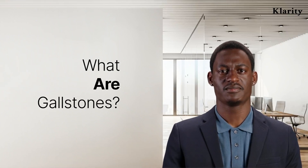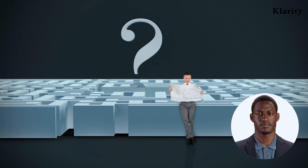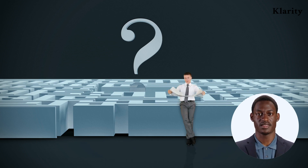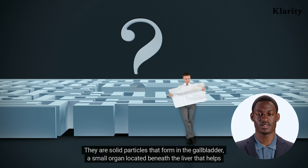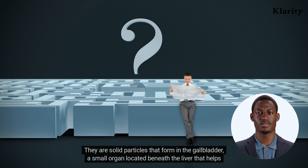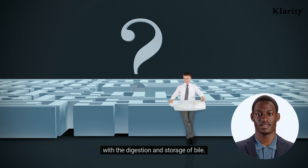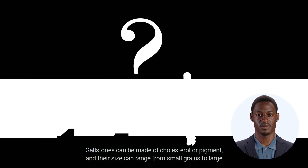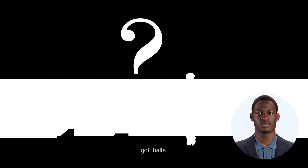Gallstones are a common medical condition affecting millions of people worldwide. They are solid particles that form in the gallbladder, a small organ located beneath the liver that helps with the digestion and storage of bile. Gallstones can be made of cholesterol or pigment, and their size can range from small grains to large golf balls.